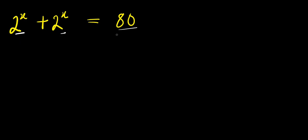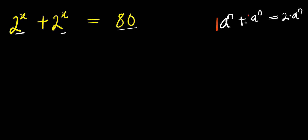We are solving for all values of x that satisfy this equation. Now look at this here: if you have a power n plus a power n, this will give you 2 times a power n, because the coefficient of a power n here is 1, and the coefficient here is 1. 1 plus 1 is 2, then you have times a power n.